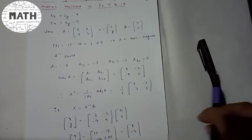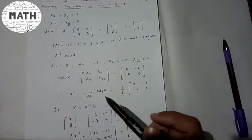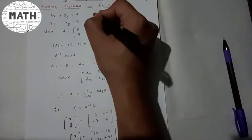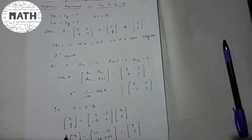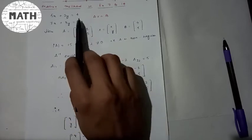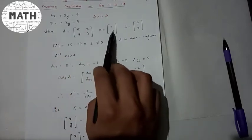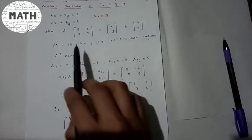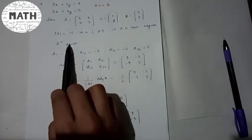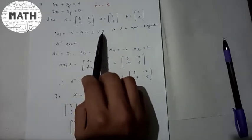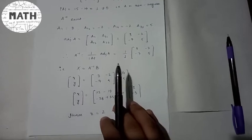To summarize the matrix method: first write the system in the form AX = B. Then verify that the determinant of A is not equal to 0. After that, find the adjoint of A, compute A inverse, and then find X = A inverse·B.